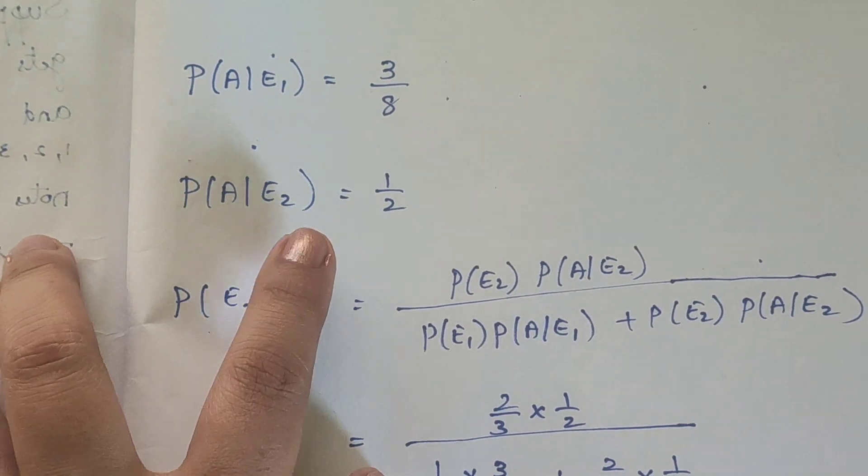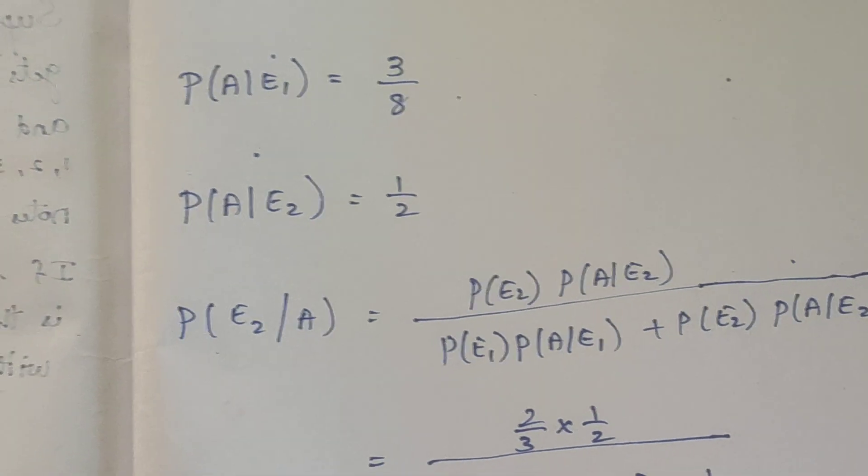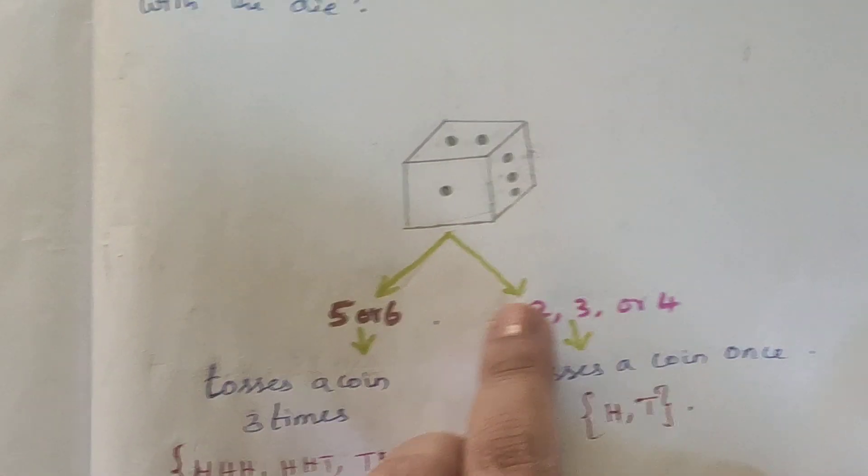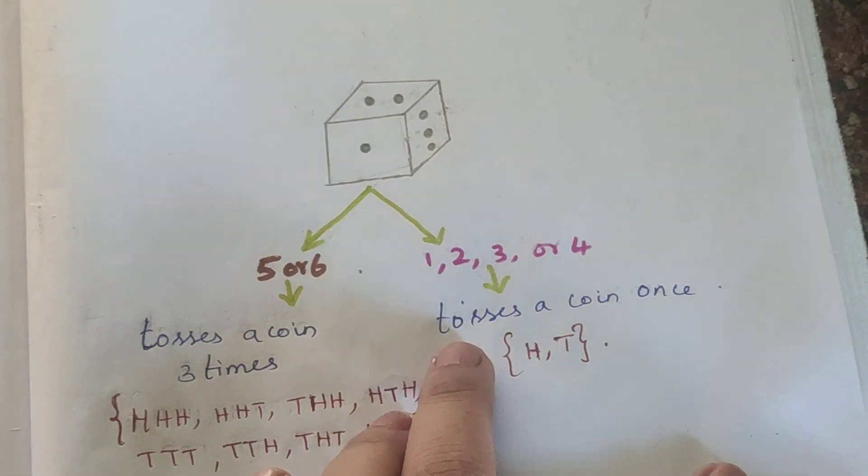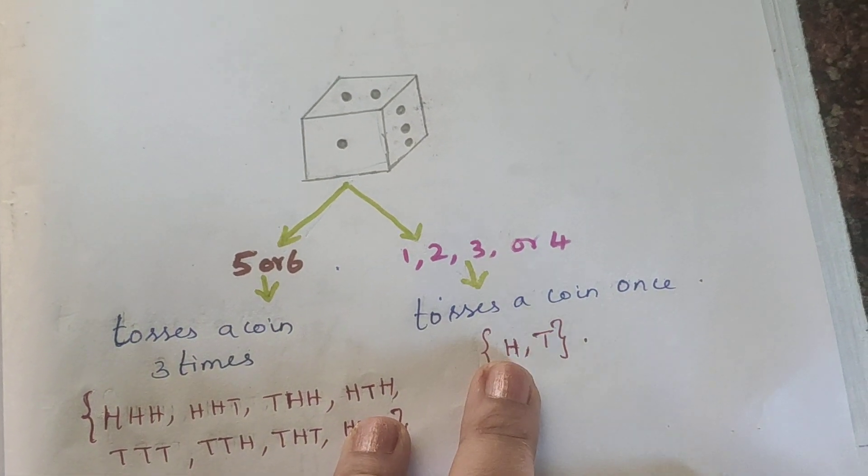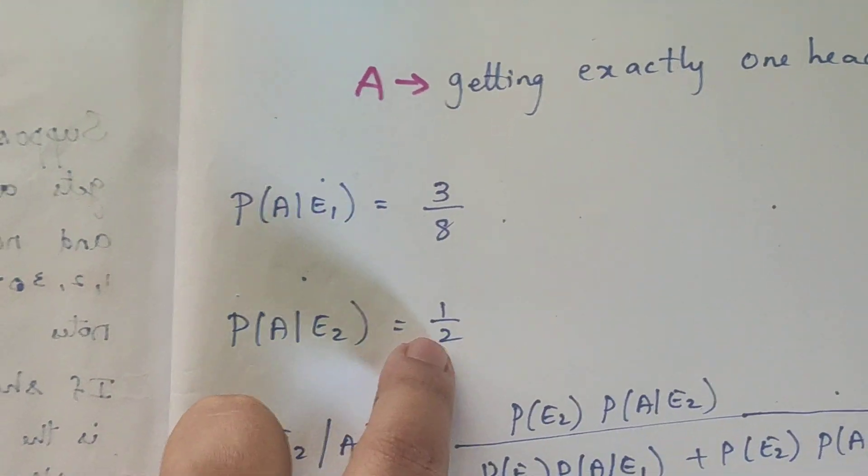For P of A given E2, if E2 occurs (1 to 4), the coin is tossed 1 time. So the probability of getting exactly one head with 1 toss is 1 by 2.